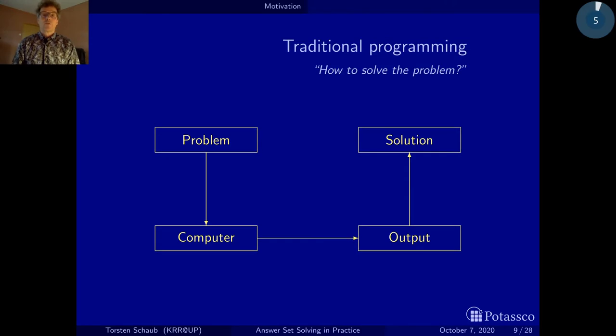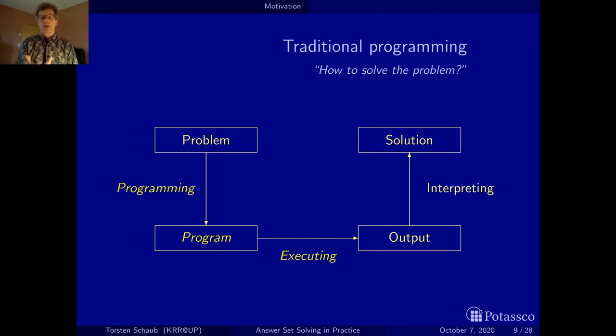Now in traditional programming, what we actually do to achieve this goal is to answer the question how to solve the problem. The how is here the characteristic word. Let's make this precise in this example. So we have the problem and then a programmer writes a program, and programming here means that the programmer is exercising control. It more or less describes how a solution is found.